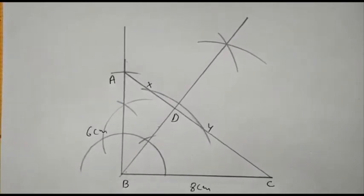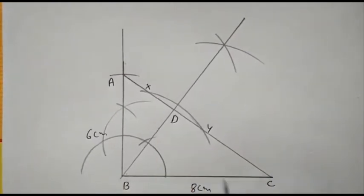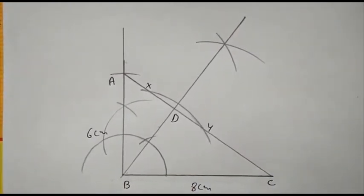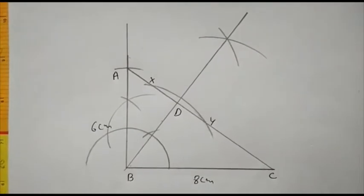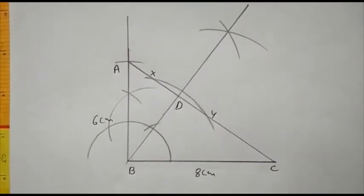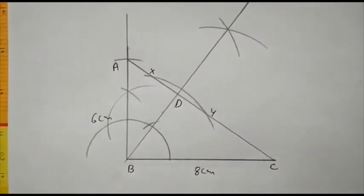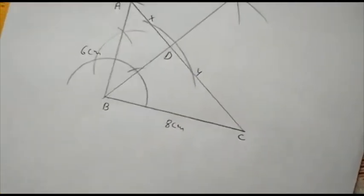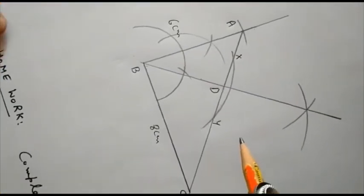Now we have to draw a circle passing through B, C, and D. That will be a circumcircle passing through B, C, and D. We have to draw the perpendicular bisector of any two sides of triangle BCD.